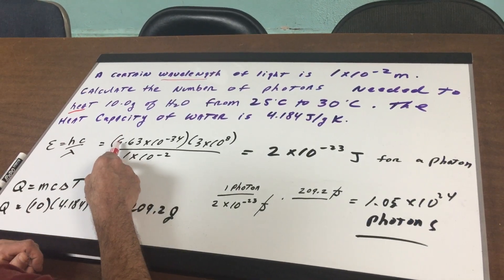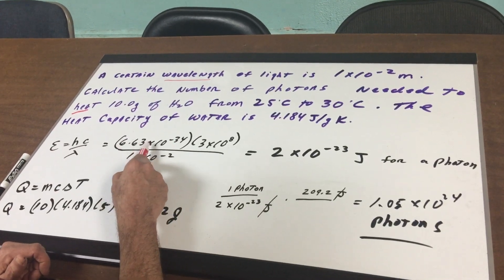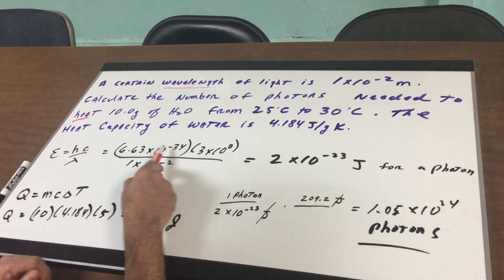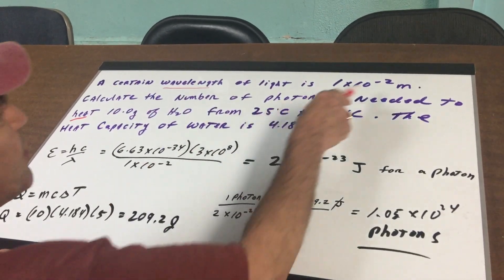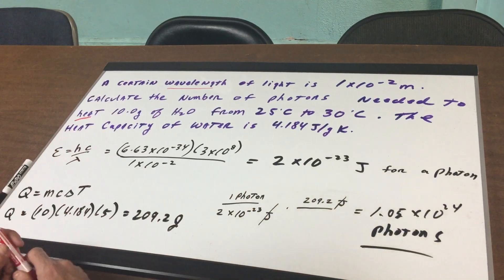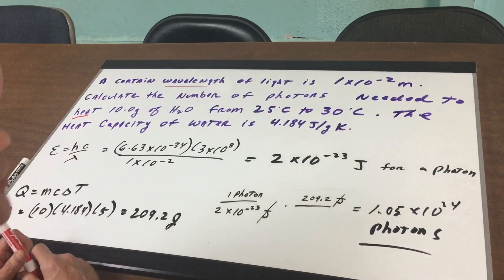Now what we're going to do is we're going to plug in. The H is given to you, 6.63 to the minus 34th. That's given. 3 to the 8th is the speed of light. That's in meters. And this was in meters. So when I did this, I got 2 to the minus 23rd joules. That's the energy for a single photon.